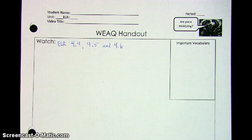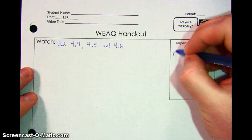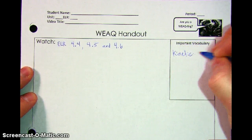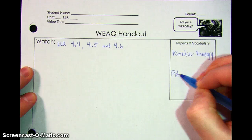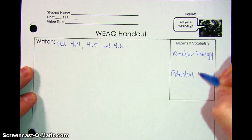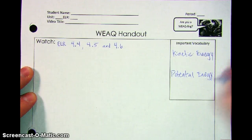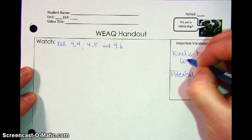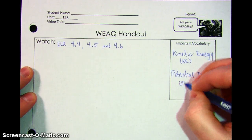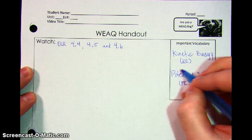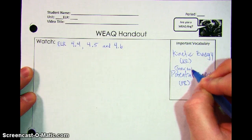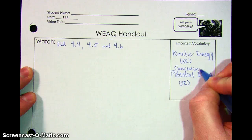First, we're going to start with the important vocabulary. We're talking about kinetic and potential energy — those are our two vocabulary words. From here on in, we're going to abbreviate: KE for kinetic energy and PE for potential energy. When we talk about potential energy, what we're really talking about to be technical is gravitational potential energy.